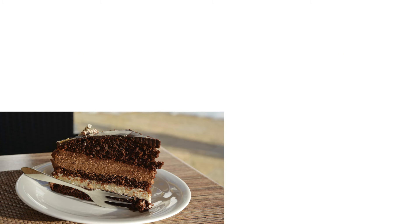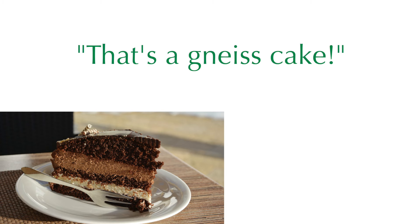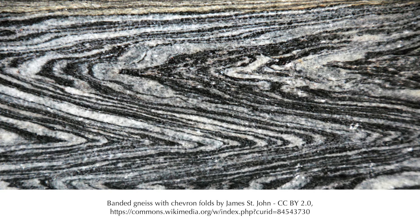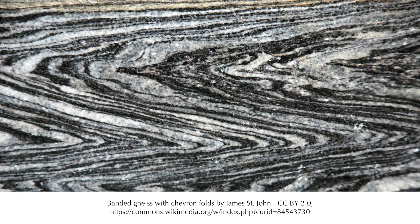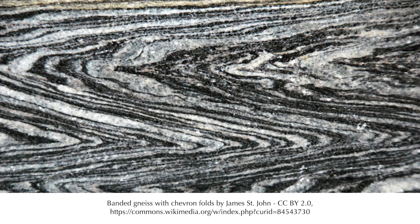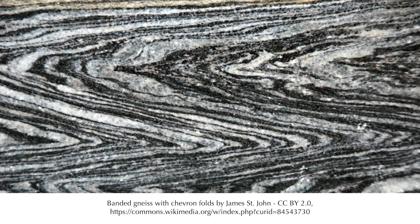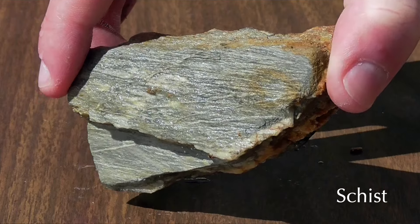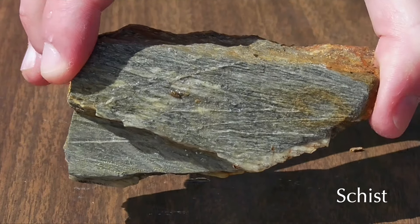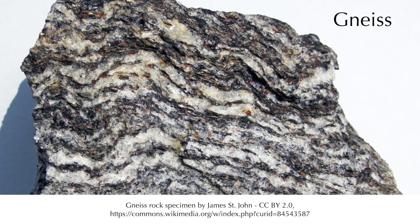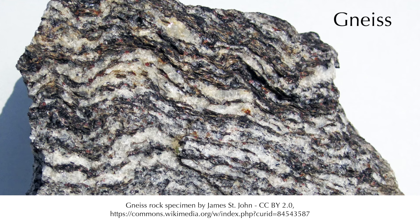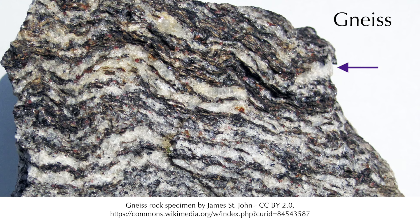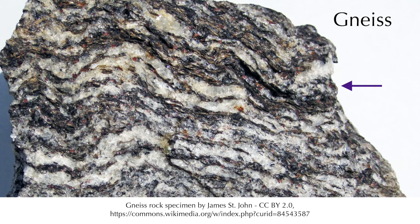In schist and gneiss — the higher grade rocks with a heap of pun potential — the pressure has actually caused different minerals to separate out in parallel layers. When you look at these rocks, you can see the foliation directly. This piece of schist has alternating white and grey layers — they are very thin, but you can still pick them out with the naked eye. Compare it with this piece of gneiss, in which the layers are quite thick. Any geologist could tell the white layers contain quartz, whereas the dark ones are rich in mica.